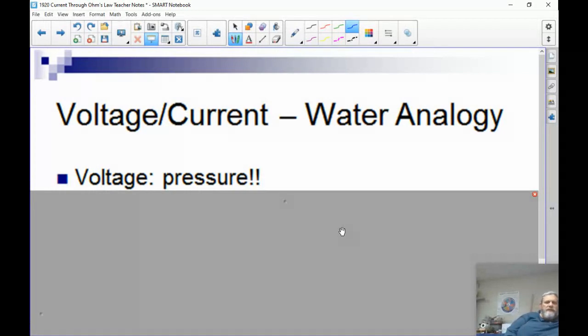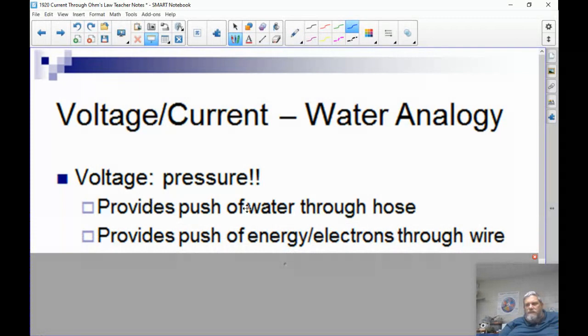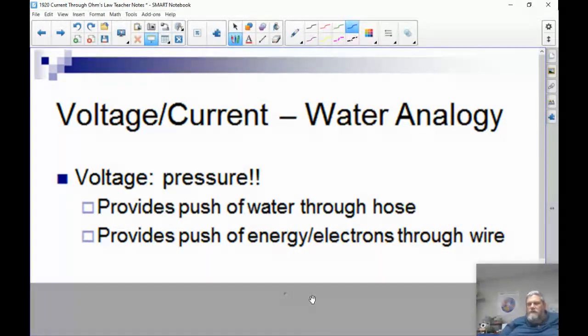One of the examples that people use to explain the idea of current is comparing it to water. When you pump water through a hose or through a pipe, it requires a pressure difference to push that water through there. Voltage in an electric circuit is much like pressure. Voltage is what pushes the electrons through the wire. So pressure provides the push of water through the hose, and voltage provides the push of the energy or the electrons through the wire.